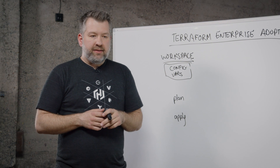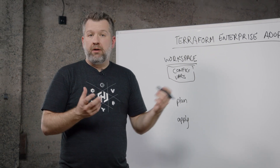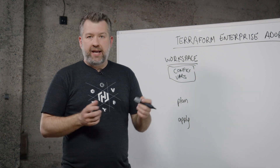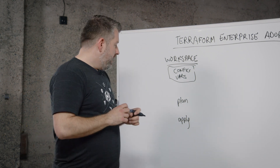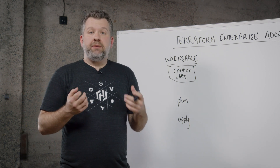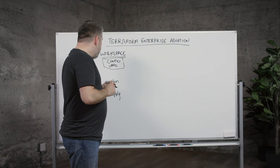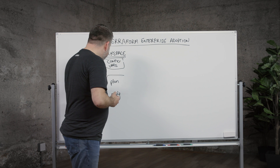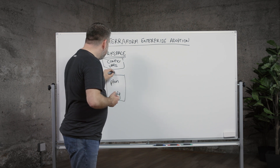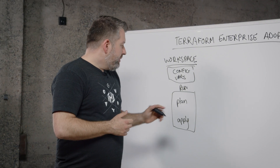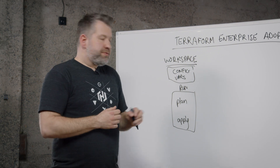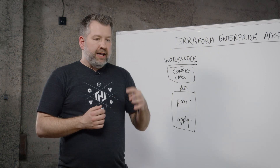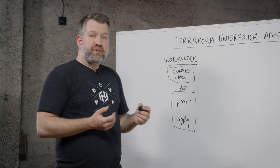In the plan phase, we see the steps that Terraform is actually going to take in our environment before making any changes — all the resources it's going to create, modify, or delete. In the apply phase, we actually make the changes to our environment. In Terraform Enterprise, within the concept of a workspace, we wrap this whole thing up in what's called a run.